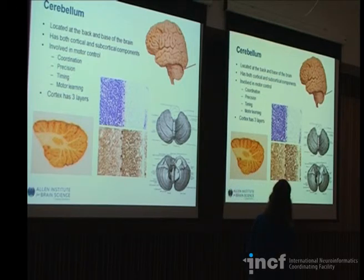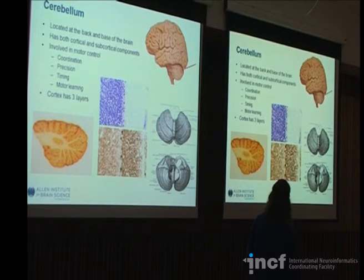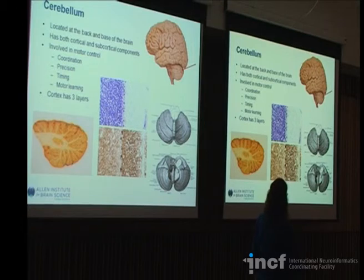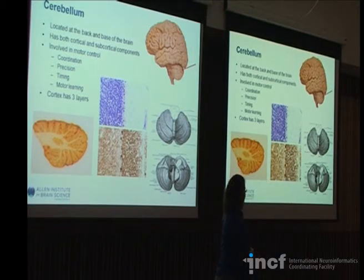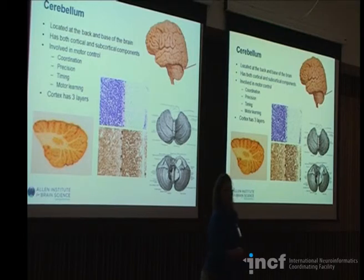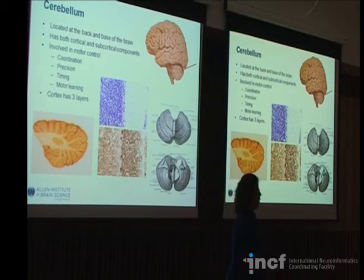You can see the large Purkinje cells in a Nissl stain. There's also an SMI-32 stain which stains neurofilaments — these are actually some of the most beautiful cells in the brain. You've probably all seen pictures of them without knowing it — beautiful, tree-like arbors. The cerebellar subcortex contains three to four nuclei depending on how you name them; the largest of which is the dentate nucleus. These nuclei are involved in communication with the rest of the brain.